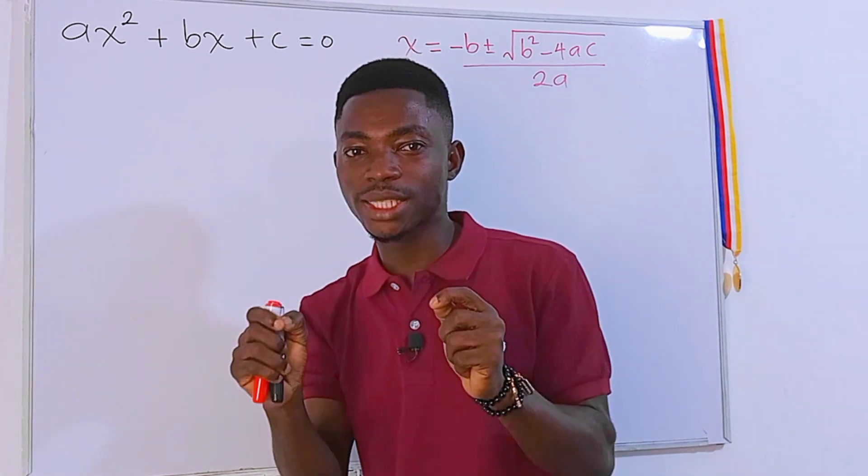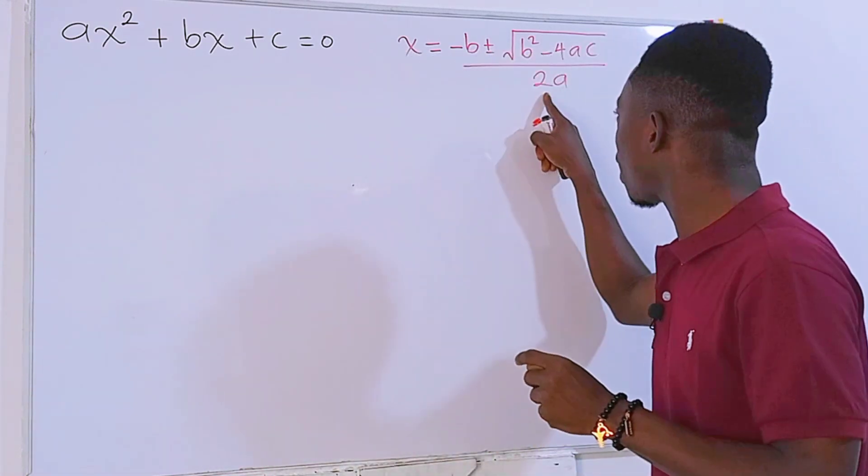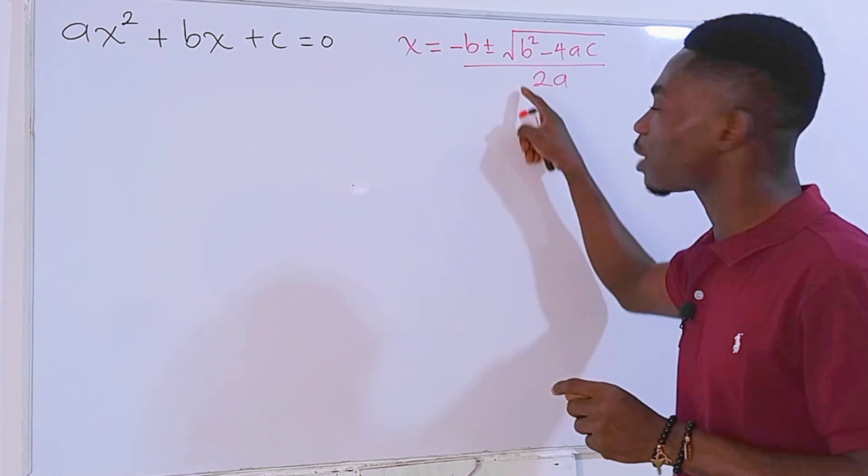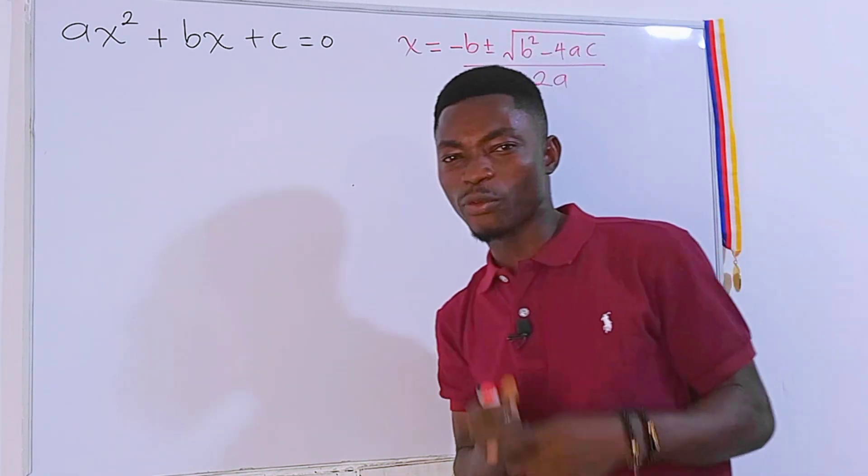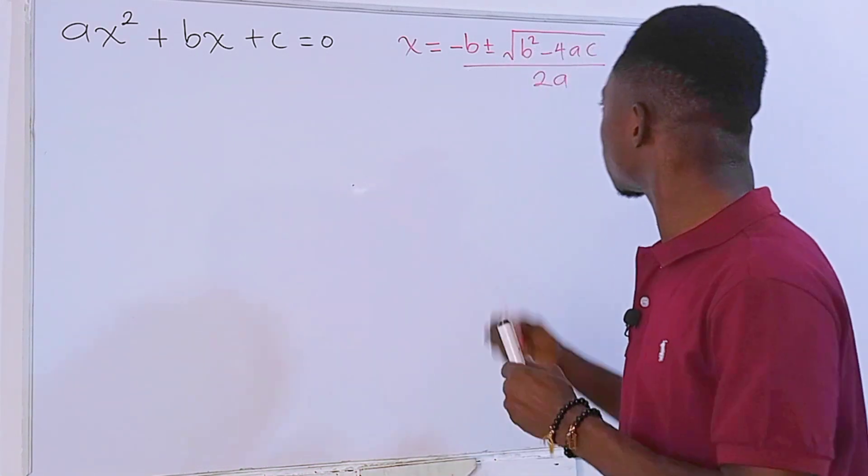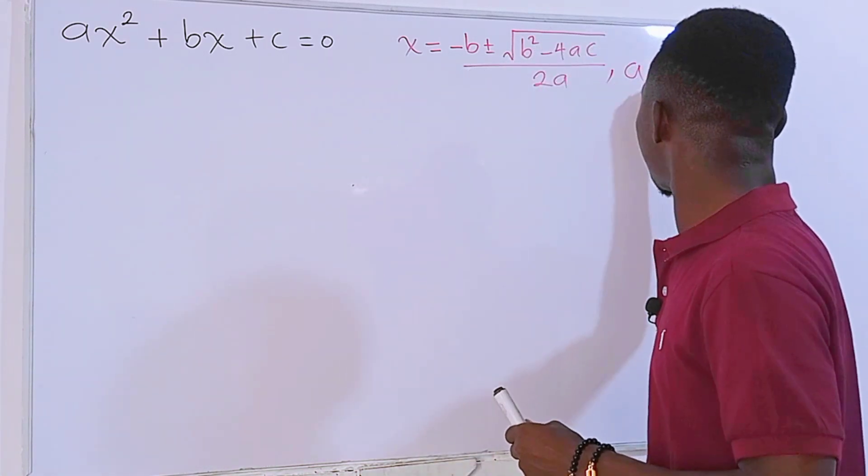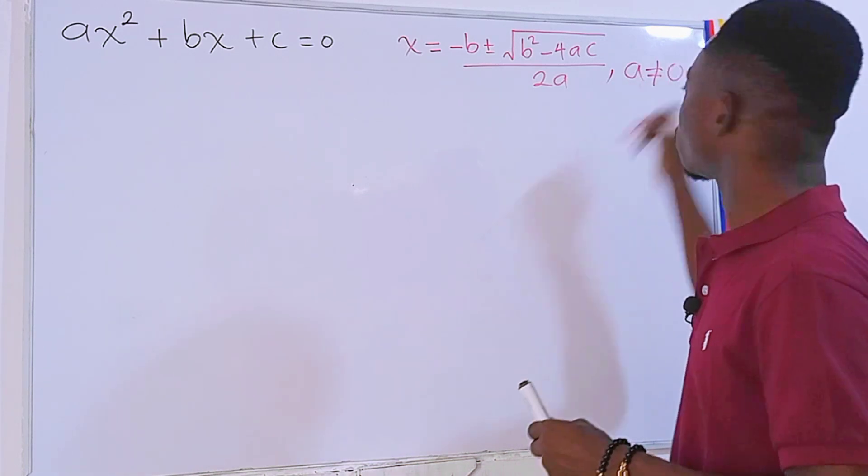And again, if a is equal to zero, then it means that right here we are going to have the denominator to be zero, which will make everything undefined. So before we start, it is important for us to state that a is never equal to zero.